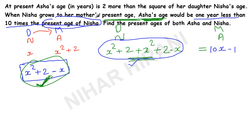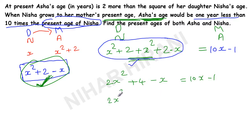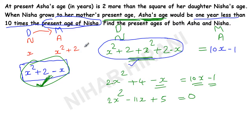Now we just need to simplify. x squared plus x squared makes 2x squared; 2 plus 2 makes 4; minus x equals 10x minus 1. So we have 2x squared plus 4 minus x equals 10x minus 1. Moving 10x to the left gives minus 10x, and minus x minus 10x gives minus 11x. Moving minus 1 to the left gives plus 5. So the equation is 2x squared minus 11x plus 5 equals 0.